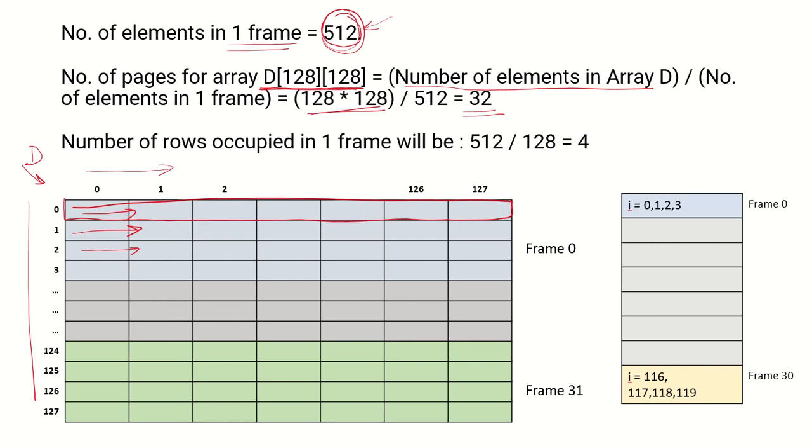So there is bound to be page faults and how many rows would be present in one frame? So there are 512 elements, each row is having 128 elements. So 4 rows can be stored in one page frame.